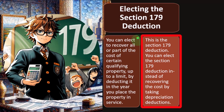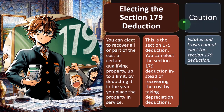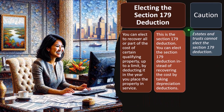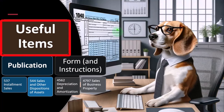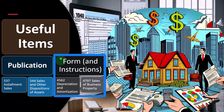It basically almost negates this whole accrual thing that they're forcing us to do in the first place. Caution: estates and trusts cannot elect the Section 179 deduction. Useful life — so items. You can look at these publications for more information: Publication 537, installment sales; Publication 544, sales and other dispositions of assets; Form 4562, depreciation and amortization; and Form 4797 and related instructions for the sale of business property.